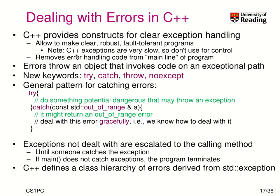These exceptions are very slow, so they should be used only for exceptional circumstances. It also allows removing error handling code from the mainline execution of the program. The errors now throw an object that allows us to invoke code on an exceptional path. The new keywords we need to know are: try, catch, throw, and noexcept. Let's have a look at the general pattern for catching errors.